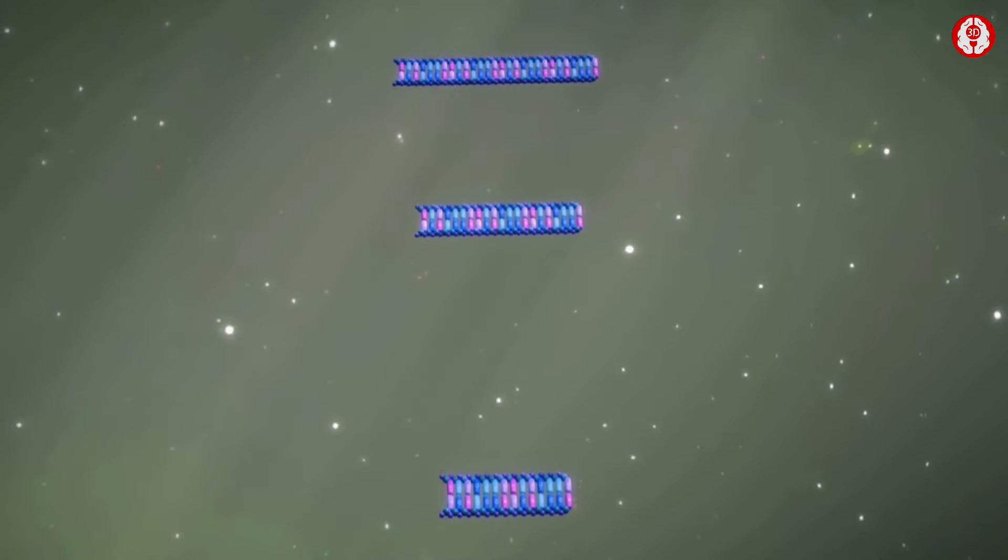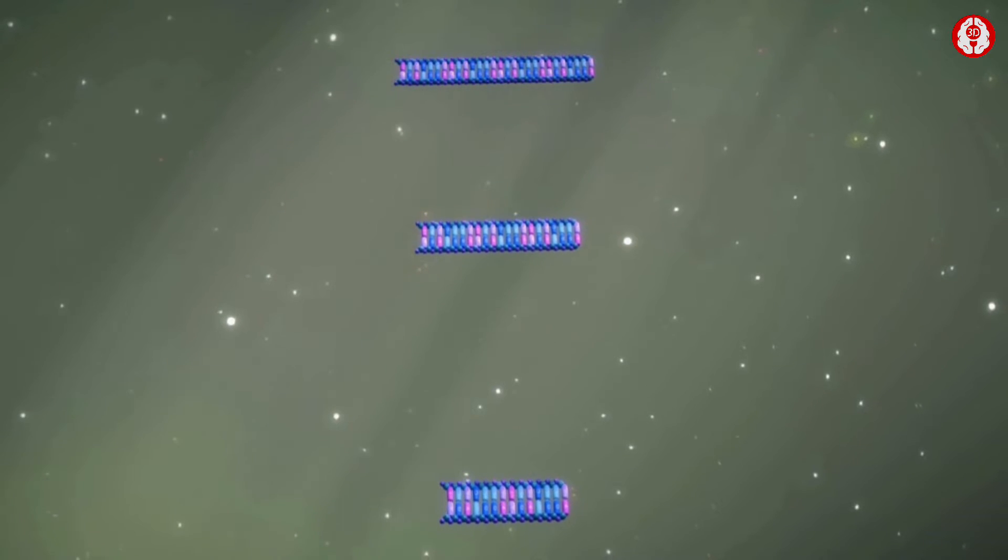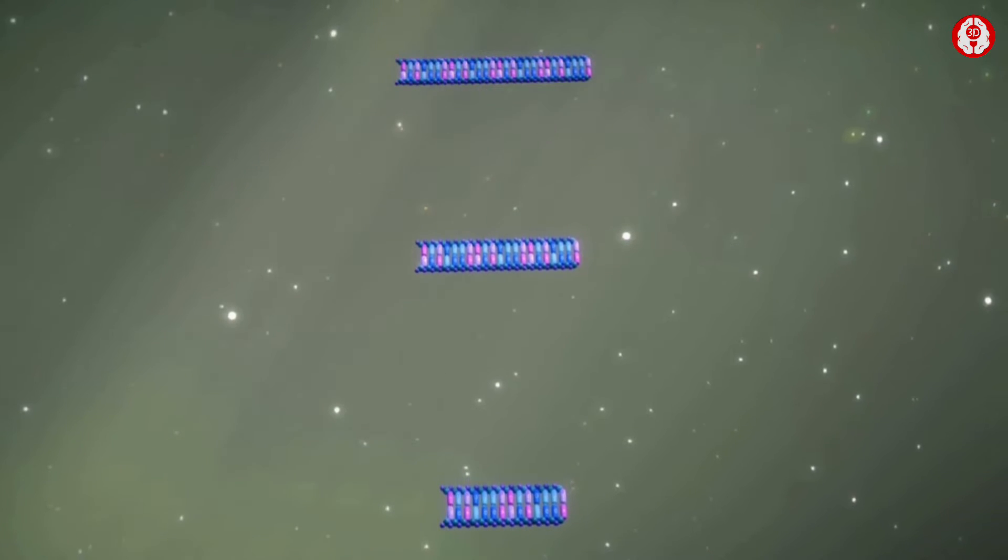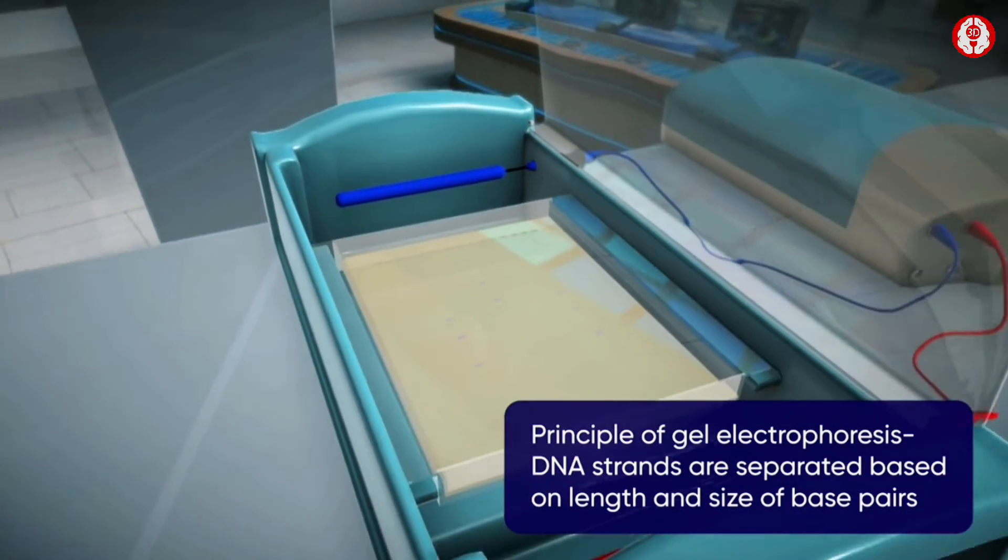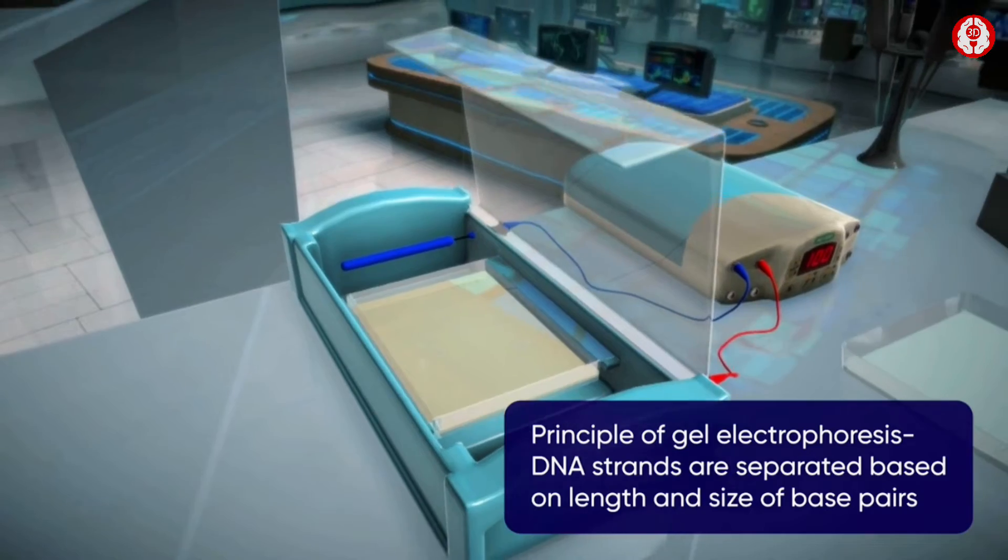Thus, the DNA strands are separated depending on their length or number of base pairs. This is the principle on which gel electrophoresis works for the separation of differently sized DNA.